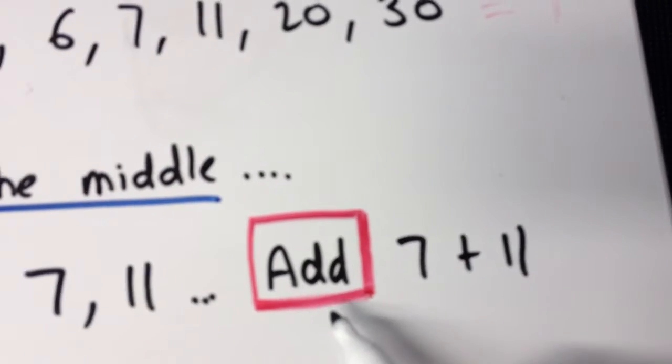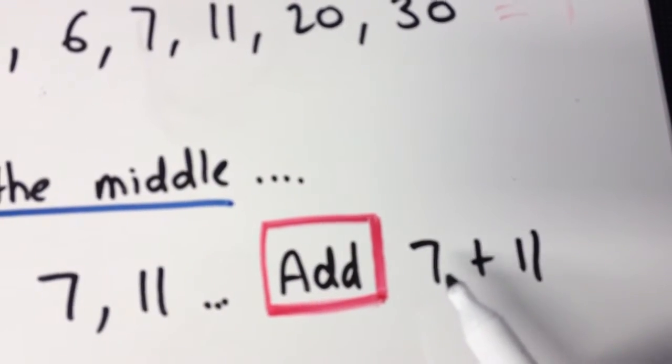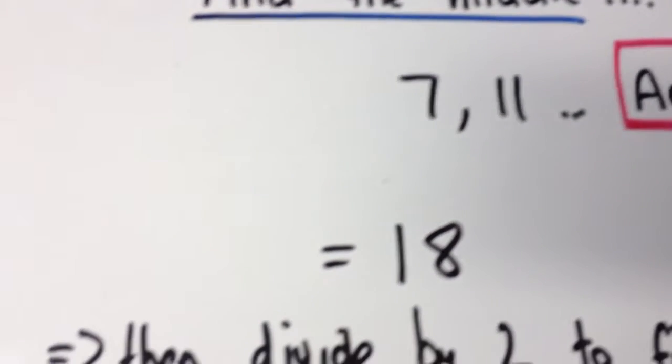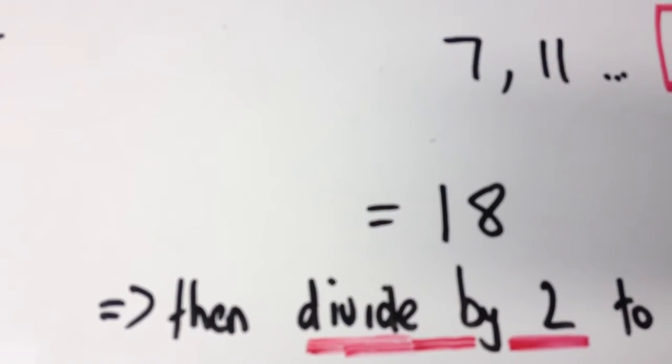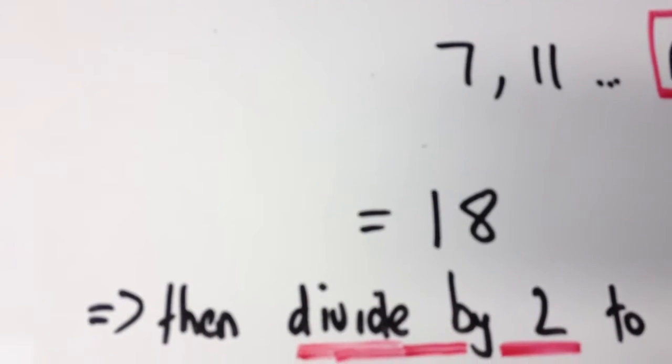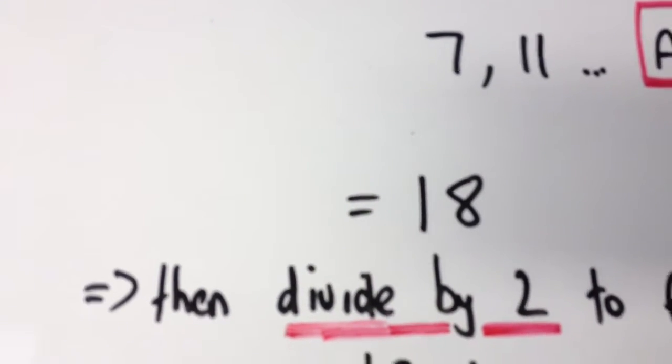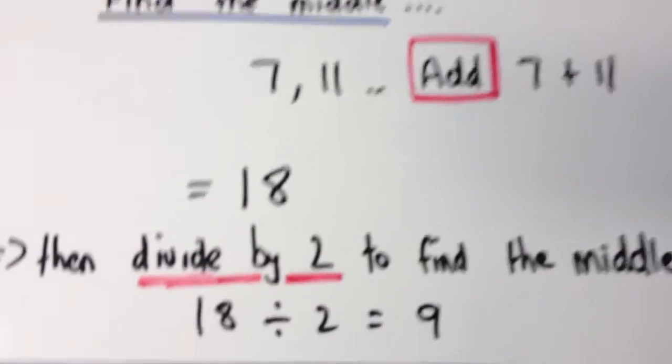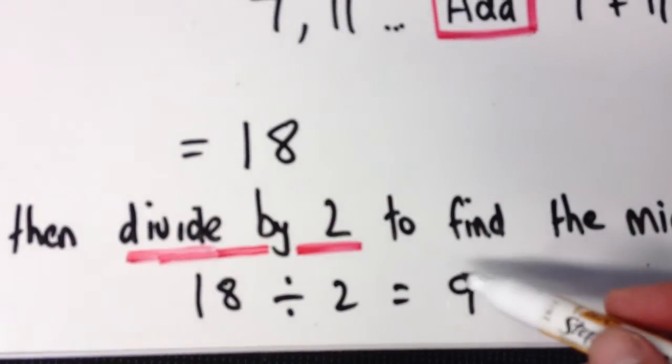Well, you add these two numbers together. 7 plus 11 gives you 18. Then you divide by 2 because you're finding the average or the halfway point between those numbers. So 18 divided by 2 equals 9.